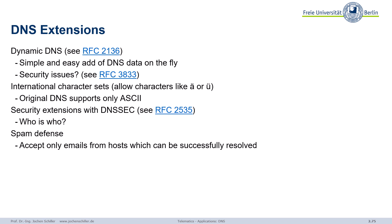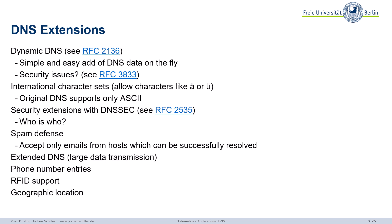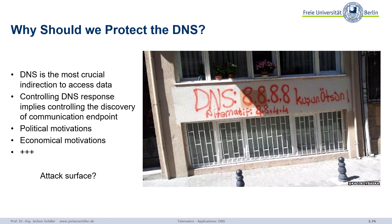There are extensions around spam defense and more. DNS is the phone book — it's extremely important and must be protected. It's the most crucial indirection mechanism to access data. If you control DNS responses, you control the discovery of communication endpoints. This is heavily used by governments for political and economic motivations — you cannot trust the name server of your ISP if it's government-controlled.